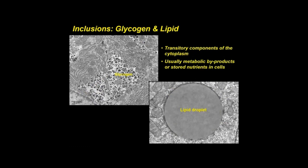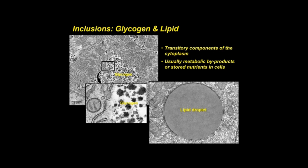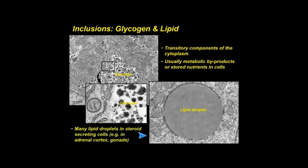Inclusions are relatively inert, dispensable, transitory components of the cytoplasm—usually metabolic byproducts or stored nutrients. They include glycogen, lipid droplets, and pigment granules. By EM, glycogen appears as non-membrane-bound, electron-dense granules with an irregular shape. Lipid is stored in the cytoplasm of many cells and appears as large spheres up to 90 micrometers in diameter, normally lacking a membrane and consisting of triglycerides and esters of cholesterol. Steroid-secreting cells, such as those in the adrenal cortex and gonads, contain many small lipid droplets.